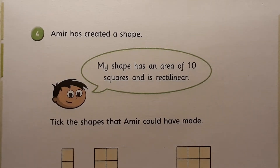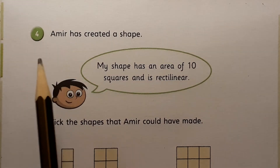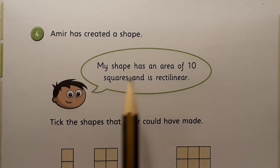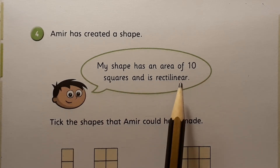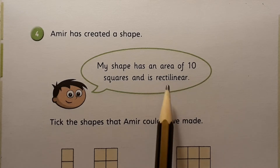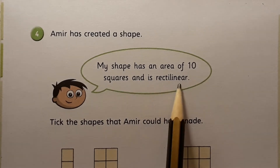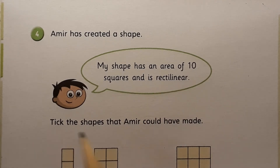The other questions are quite straightforward, so skipping to question four, which says Amir has created a shape. His clue is: 'My shape has an area of ten squares and is rectilinear.' Rectilinear means formed by right angles and straight lines. Tick the shapes that Amir could have made.